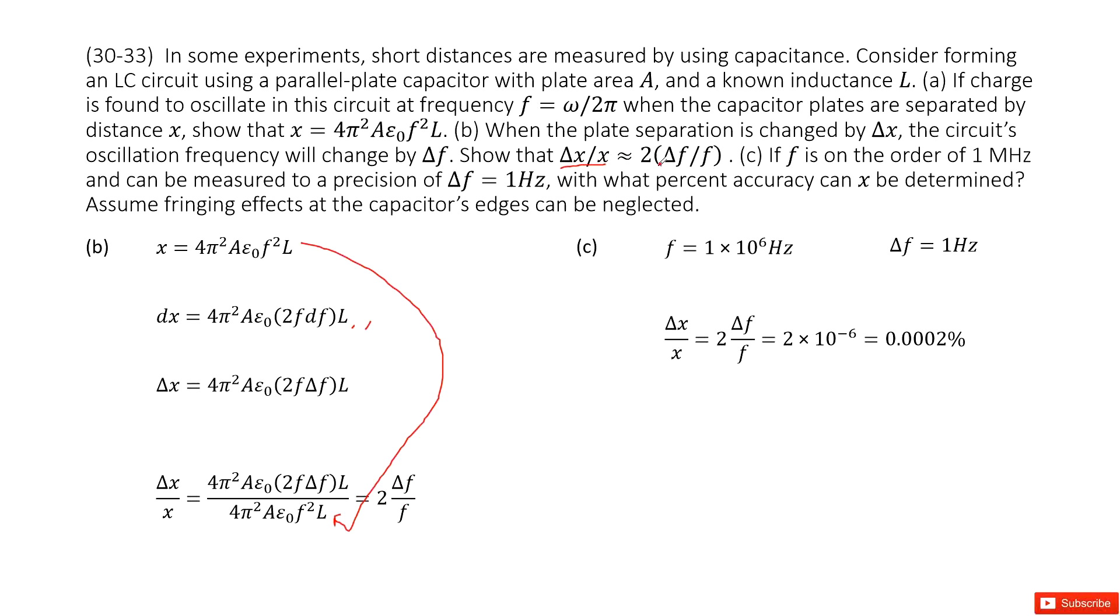The third part is very easy. It tells you the quantity for f and the quantity for Δf, and asks you to find Δx over x. So very easy. We just input f and Δf in this equation, get the answer there. It's very, very small. Thank you.